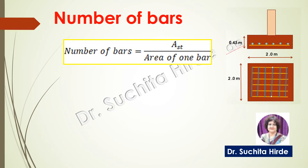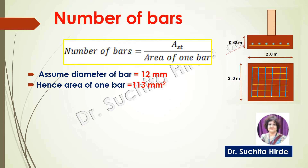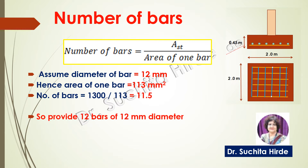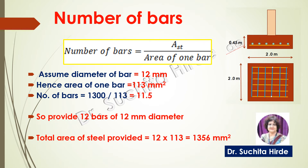In footing we calculate the number of bars using the standard formula. Assuming diameter of bar as 12 millimeter, the area of one bar is π/4 × d² = 113 millimeter square. So number of bars = 1300 ÷ 113 = 11.5, meaning we will provide 12 bars of 12 millimeter diameter. The Ast required is 1300 millimeter square whereas total Ast provided is 12 × 113 = 1356 millimeter square. These 12 bars are to be provided in both directions.